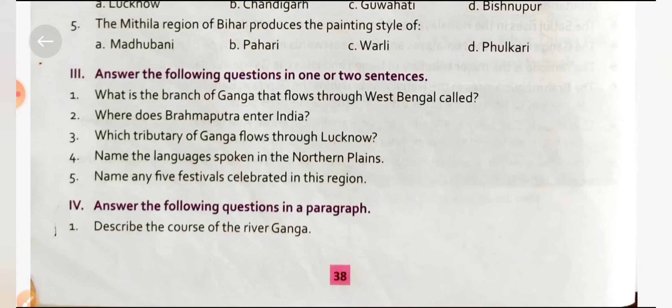Where does the Brahmaputra enter India? The Brahmaputra enters India in Arunachal Pradesh. The Brahmaputra River originates in China where it is known as the Tsangpo River, and when it enters India it is called the Brahmaputra. Which tributary of Ganga flows through Lucknow? The Gomti River, a tributary of Ganga, flows through Lucknow.